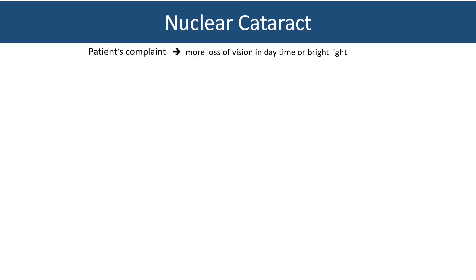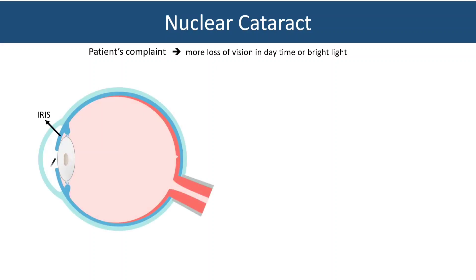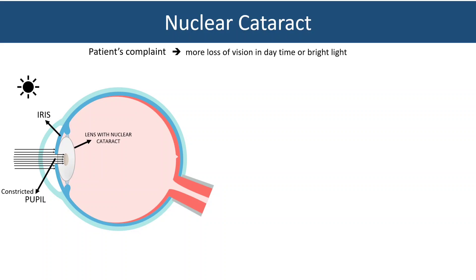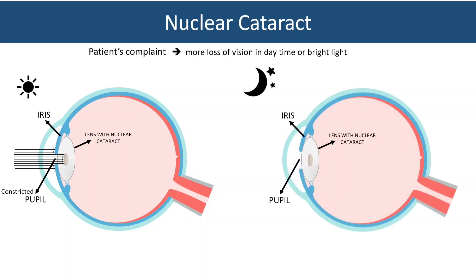Patients having nuclear cataract will complain of more loss of vision in daytime or bright light. In bright light, the pupil constricts, so light rays pass only through the center of the lens, which is obstructed by the opacity, and the patient cannot see well. In nighttime or dark conditions, the pupil dilates, allowing light rays to pass from the periphery where the lens is clear, forming an image. So patients with nuclear cataract have more vision loss in daytime but can see better at night.